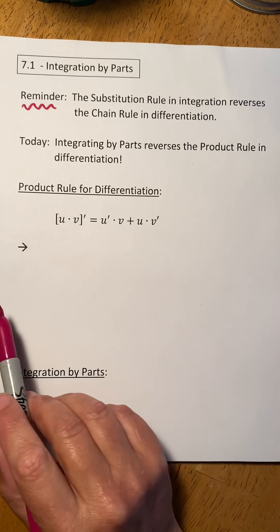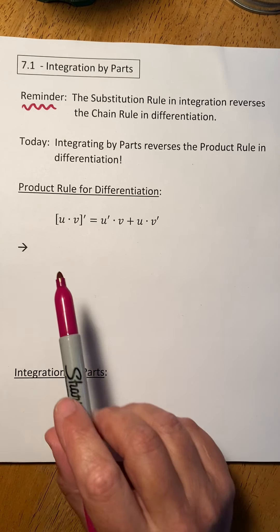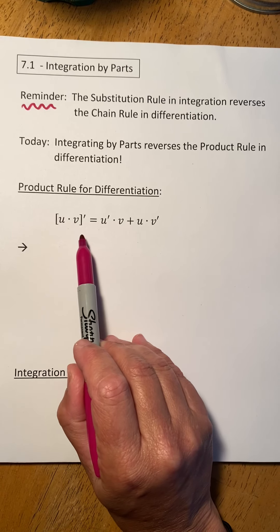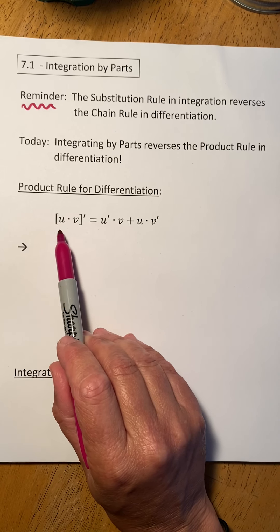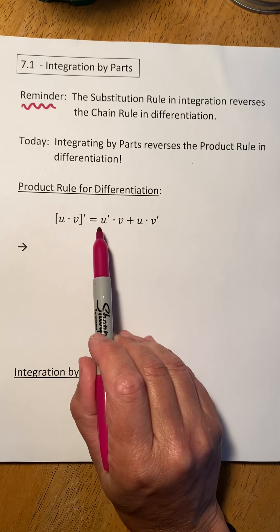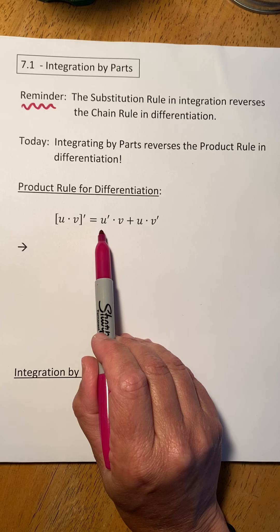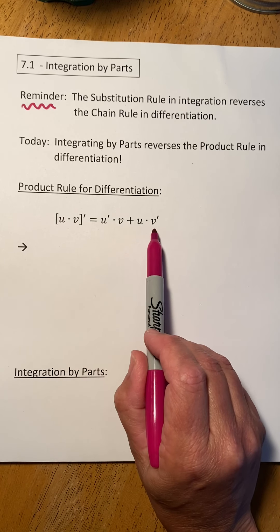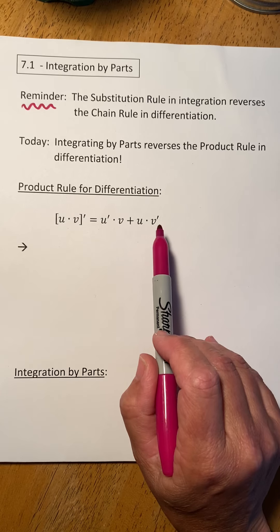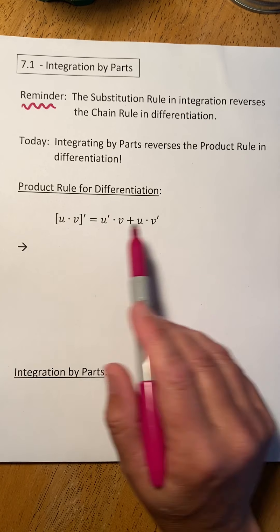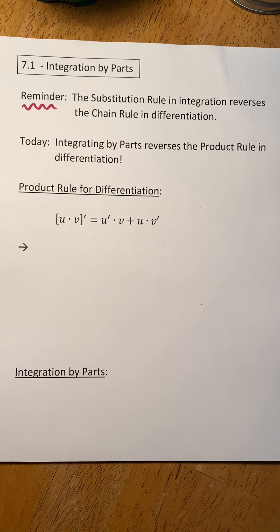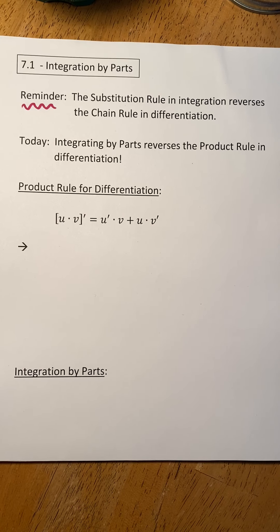So let's remind ourselves what the product rule for derivatives is. We have the product of two functions, u and v. The derivative of a product is the derivative of the first function times the second plus the first function times the derivative of the second. Different books write this differently — we can switch the order of addition or multiplication — but in the end, the result is the same.